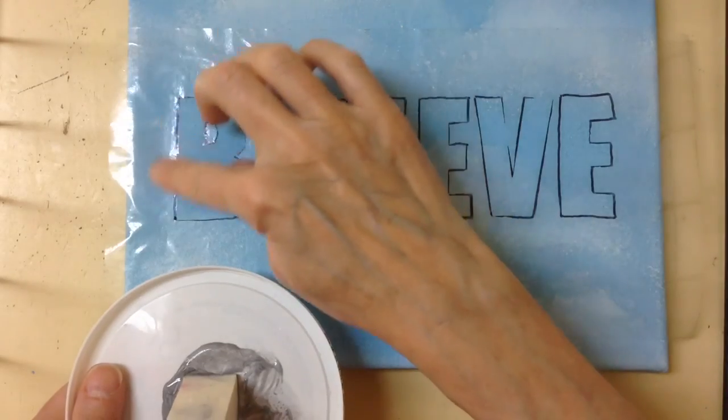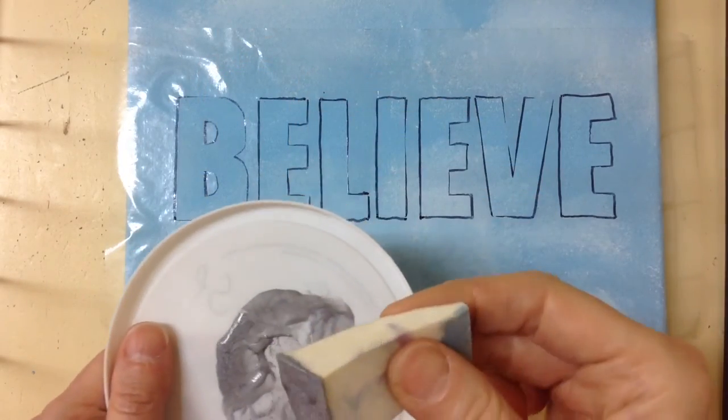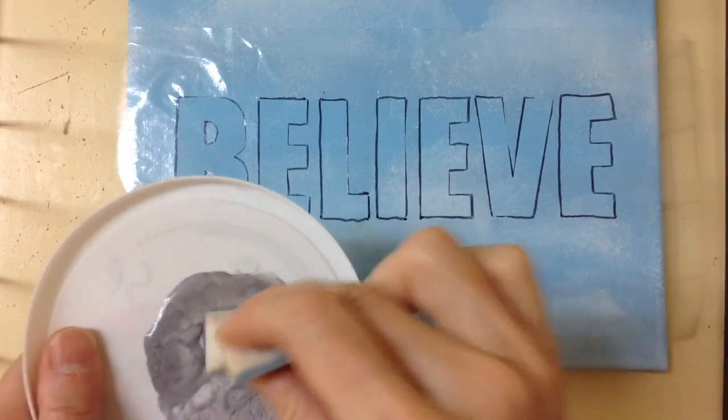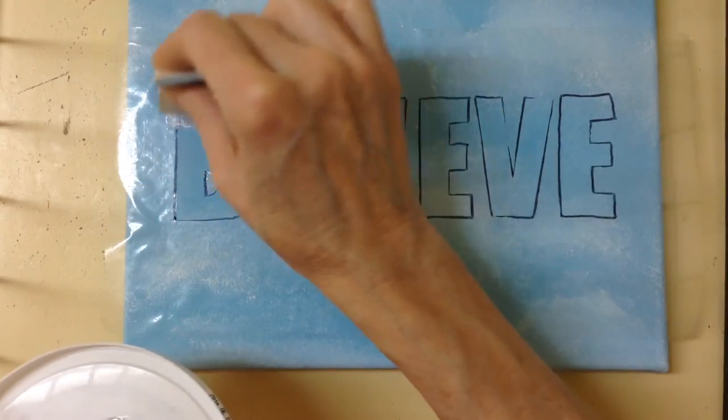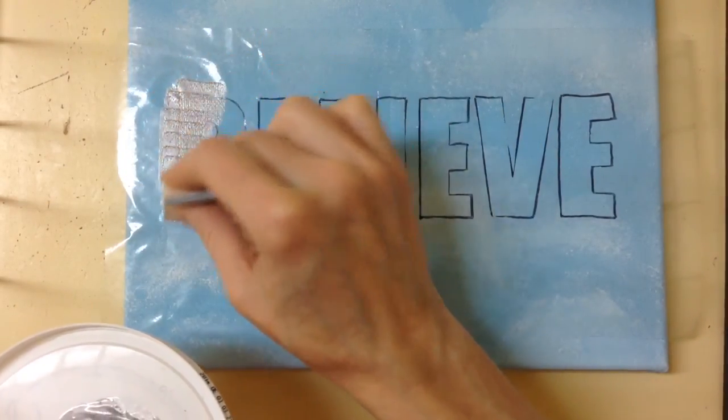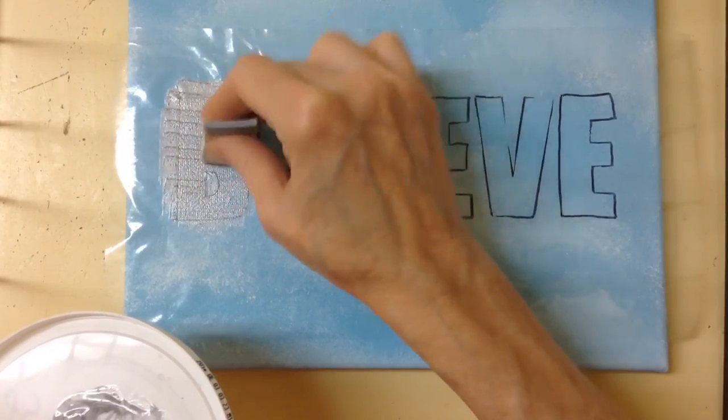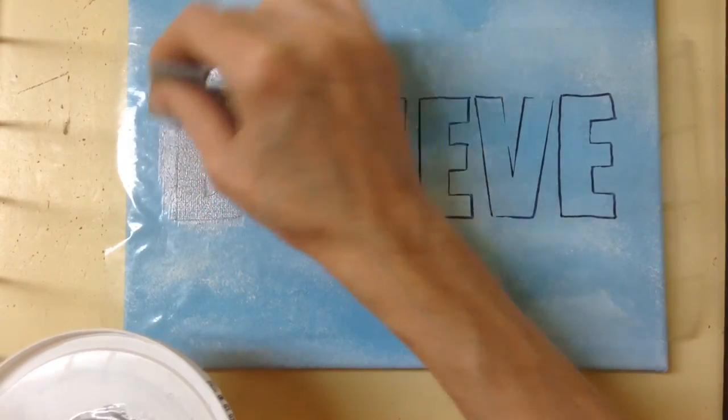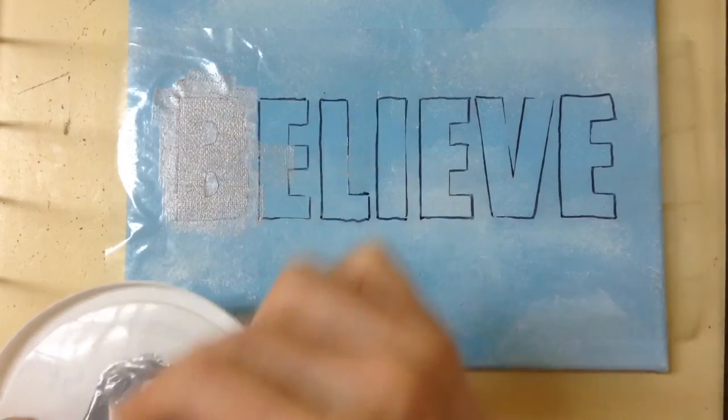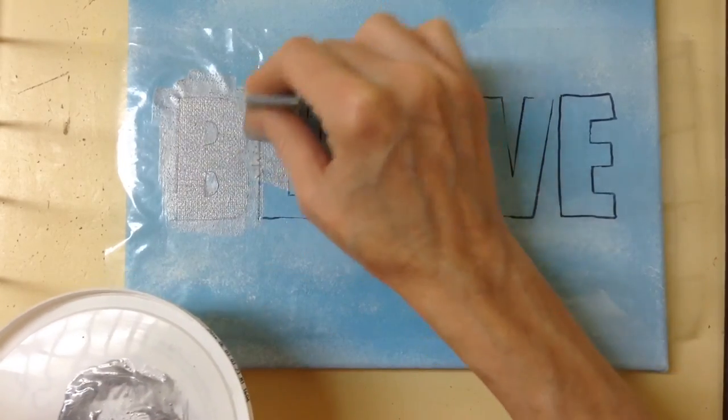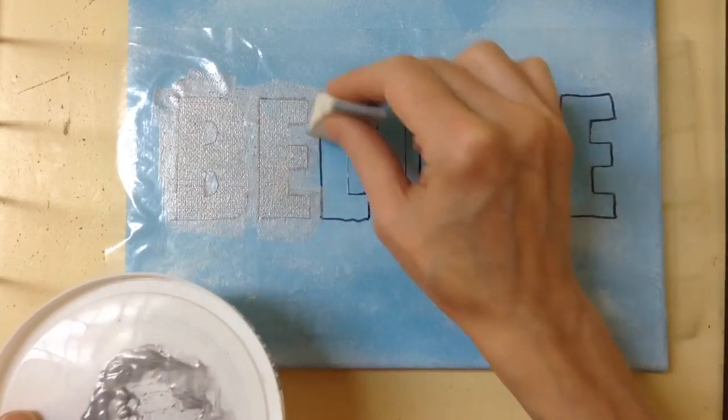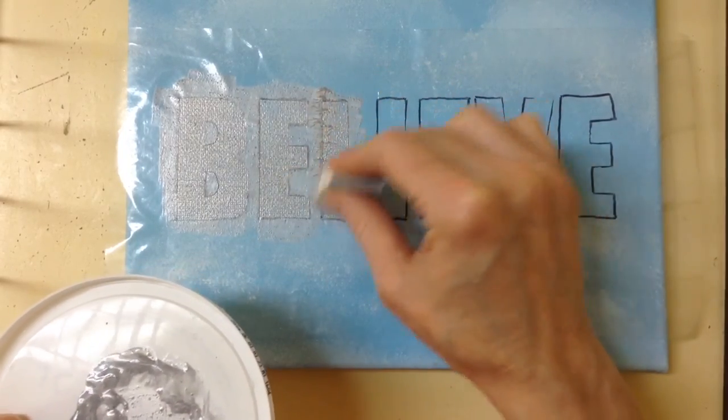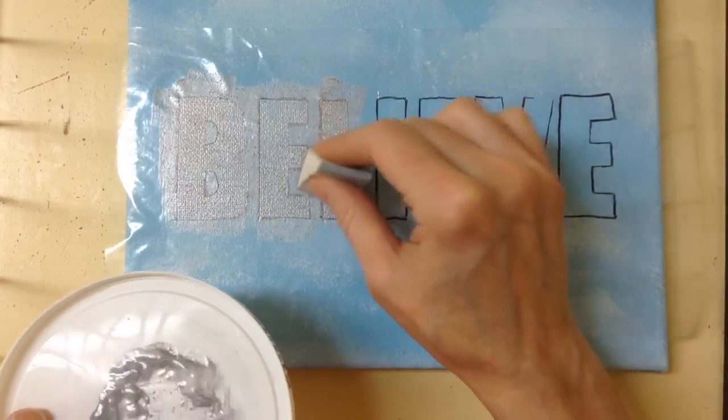So now we're going to add our paint. So I chose silver and we want to use a dry clean sponge and we're just going to sponge our silver paint on there and then we're going to go ahead and sponge it over the letters. And you might need a couple of coats depending on the quality of your acrylic paint. So I'm going to go over it once and let it dry and then go over another time.